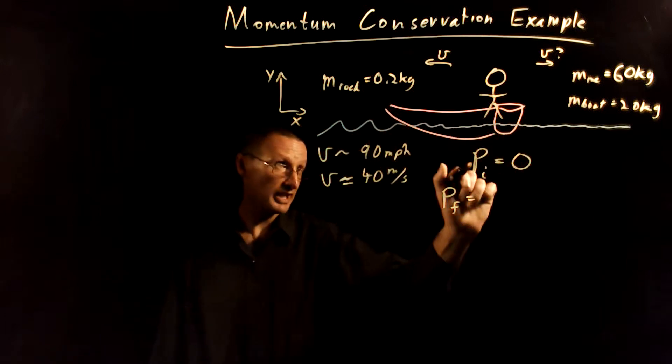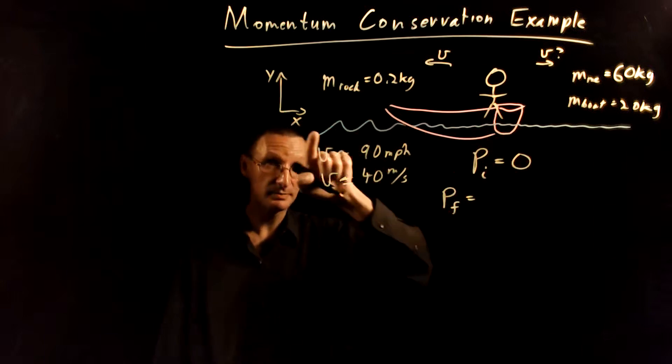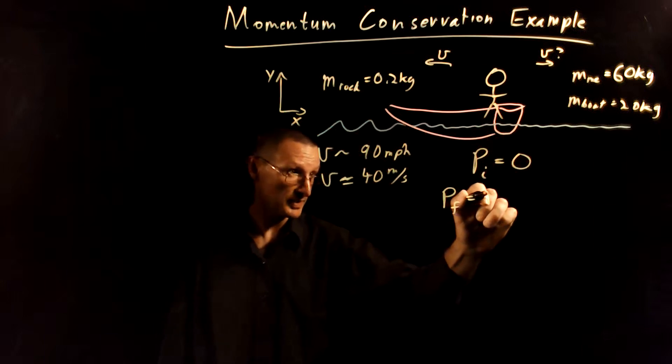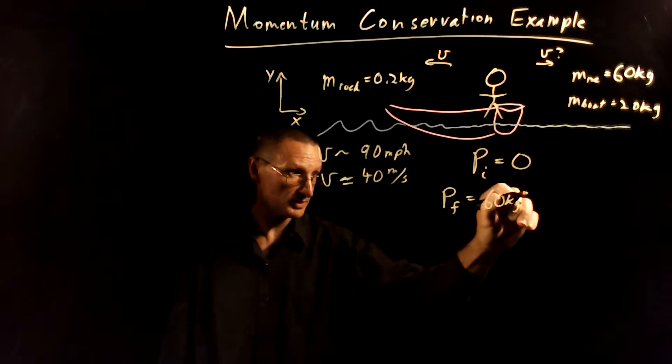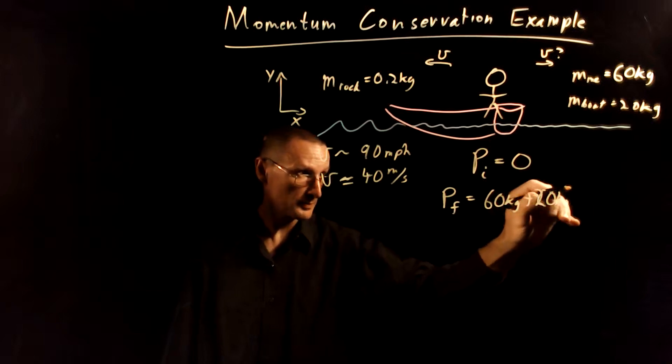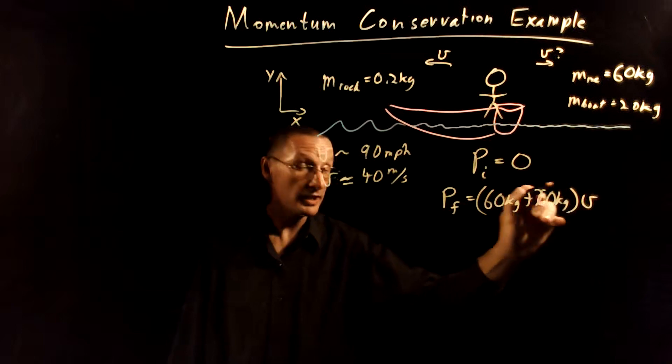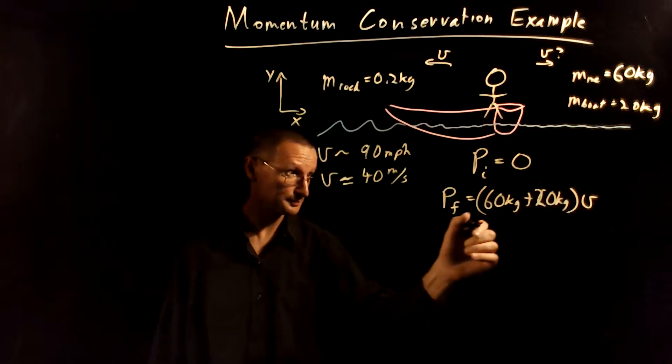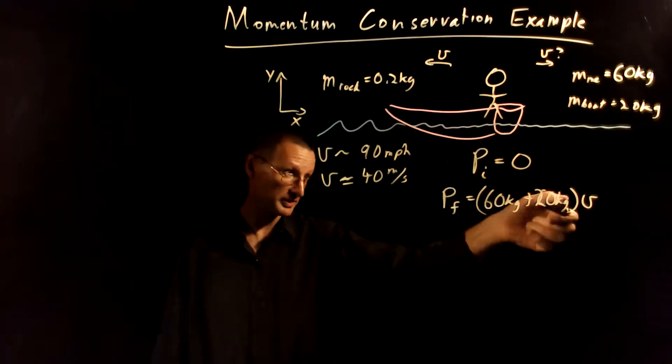So we're going to have a momentum that's that way, that's positive in the x-direction. That's going to be 60 kilograms plus 20 kilograms times the velocity of the boat, and we're in the boat so that's our velocity too.